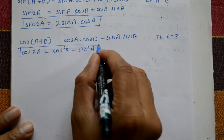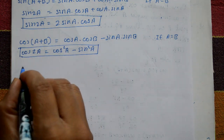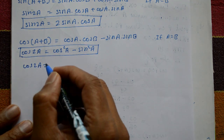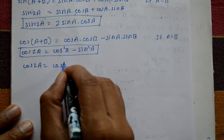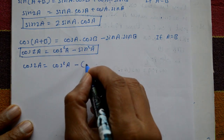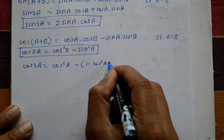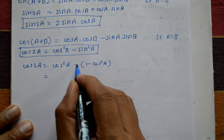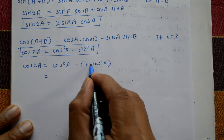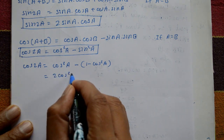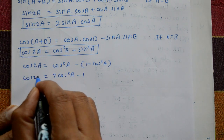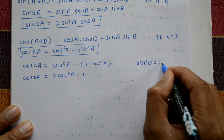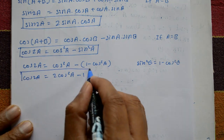This is one more standard formula. And one more form: cos 2a equals cos squared a minus sin squared a. Replace sin squared a with 1 minus cos squared a. Opening the bracket: cos squared a minus 1 plus cos squared a equals 2 cos squared a minus 1. Also, the basic identity sin squared theta equals 1 minus cos 2a is one more standard formula.